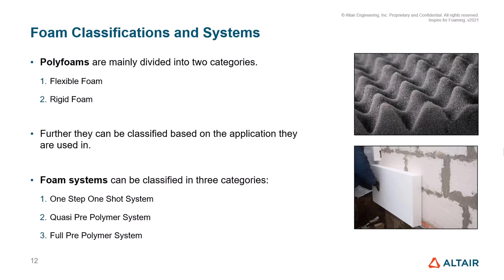Polyfoams can mainly be divided into two categories: flexible foam and rigid foam. They can also be classified based on the application they are used for. Foam systems can be classified into three different categories: the 1-step 1-shot system, quasi-prepolymer system, and full-prepolymer system.